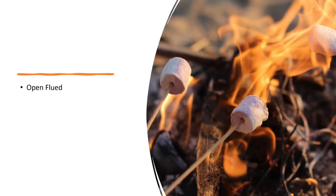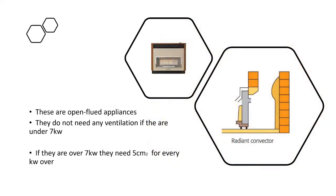Let's start with open flued fires. Open flued appliances do not need any ventilation if they are under 7 kilowatts. If they're over 7 kilowatts, then they need 5 cm² of ventilation for every kilowatt that they are over 7. Open flued appliances take their air from the room that they're sitting in and get rid of the combustion gases to an outside source, usually via a flue.